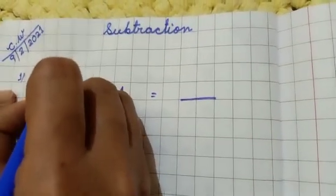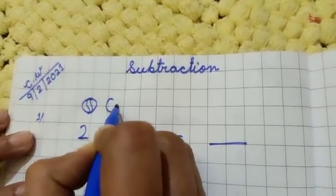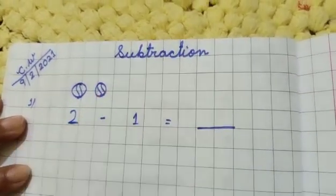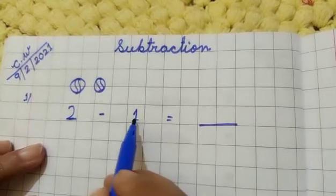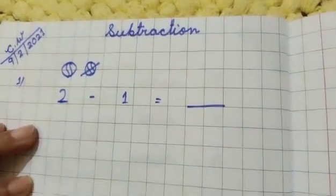Number one. Number one is 2 minus 1 equal to dash. So here I am drawing two objects, one ball, two balls. Okay.